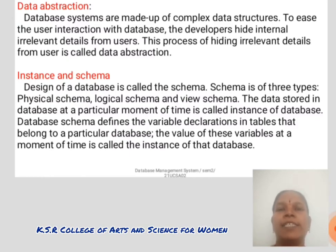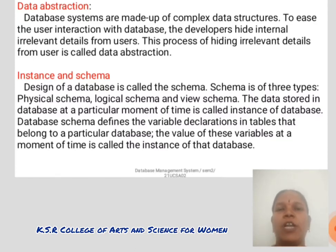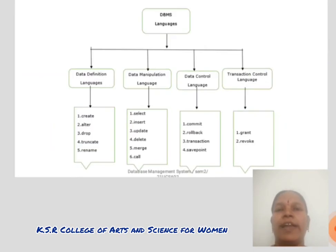Instance and Schema. The design of a database is called the data schema. Schema is of three types: physical schema, logical schema, and view schema. The data stored in a database at a particular moment of time is called an instance of the database. Database schema defines the variable declarations in tables that belong to the particular database, and the values of these variables at a moment in time is called the instance of the database.